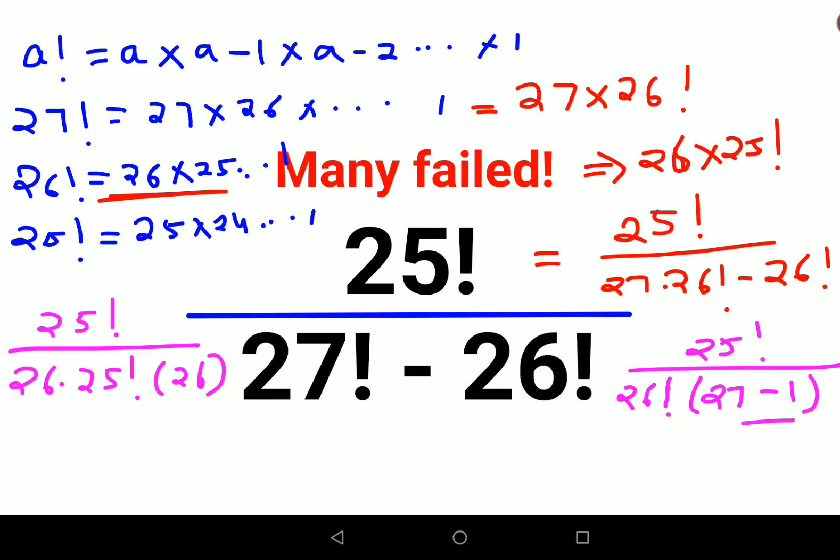Now you can see that this and this cancels. So the answer is 1 upon 26 squared, or 1 upon 676.